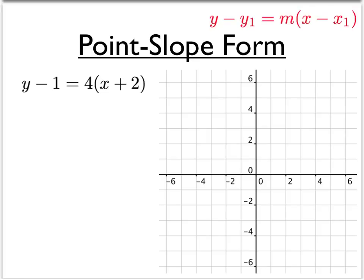Here our job is to graph a line that's in point slope form. We have y minus 1 is equal to 4 times the quantity x plus 2.